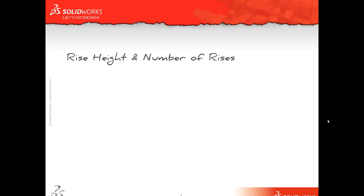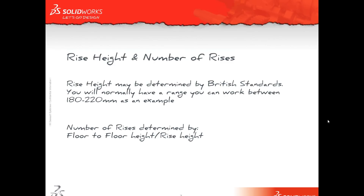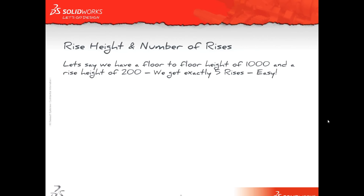With regards to the rise height and the number of rises, the rise height would normally be determined by British standards. So depending on the type of staircase that you're doing, you'll probably have a range that you can work between — it might be between 180 to 220mm, as an example. The number of rises is determined by your floor-to-floor height divided by your rise height. If we have a floor-to-floor height of 1000 and a rise height of 200, we get exactly five rises.